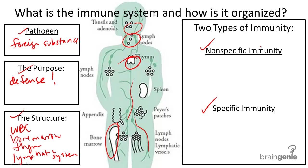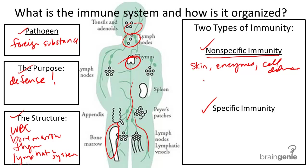The first is called nonspecific immunity. Nonspecific immunity helps to slow the progress of disease or prevent it altogether. It includes the skin, enzymes, cellular defense, something called interferon, and the inflammatory response.